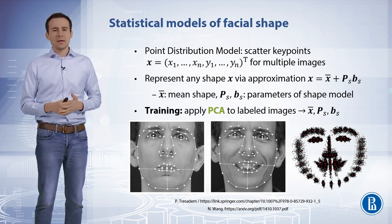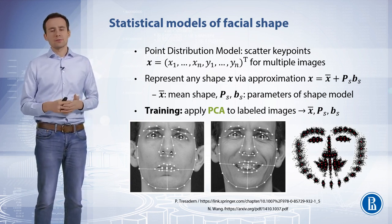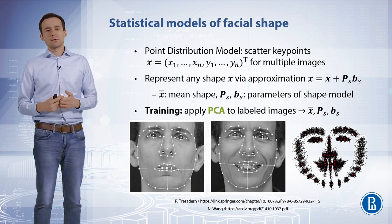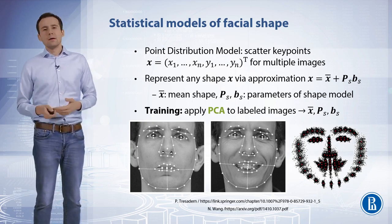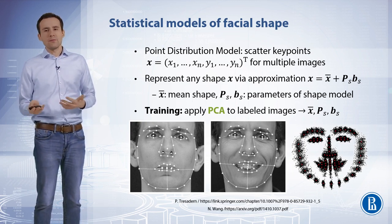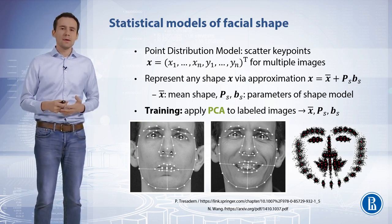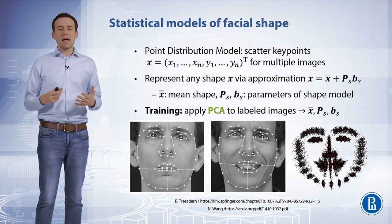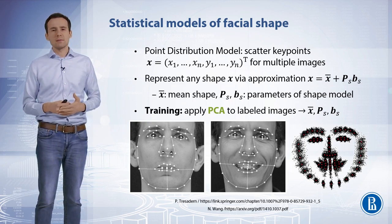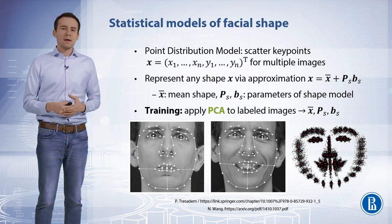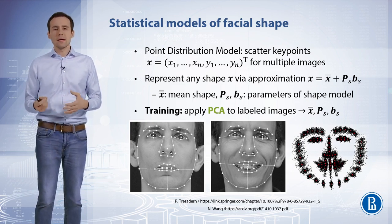We can also answer the question of whether a new shape looks reasonably similar to the training data. To compute a prior model of facial shape, we have a few classical approaches. Active shape and active appearance models are two of the most representative face alignment models. This video will only briefly describe the active shape model, or ASM.